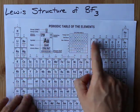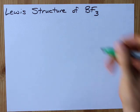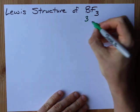For boron it's one, two, three electrons. Let me write that down - three electrons for the boron.